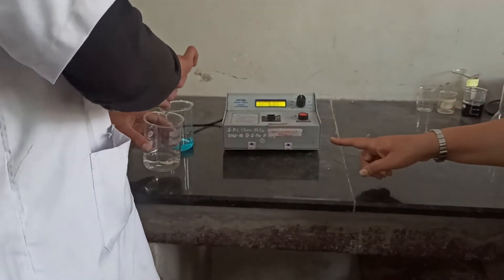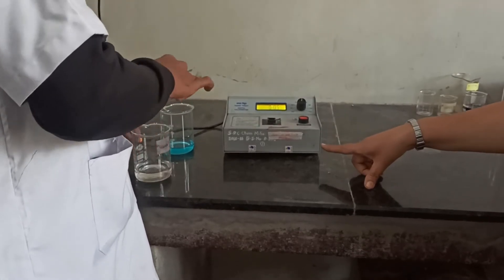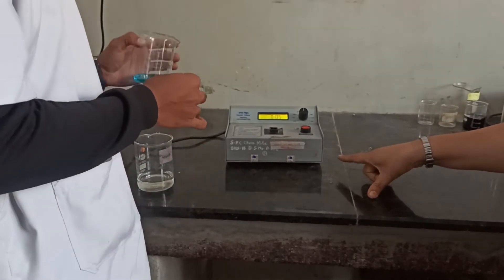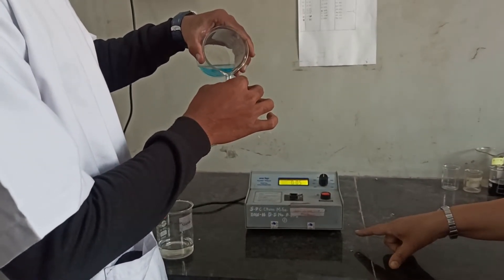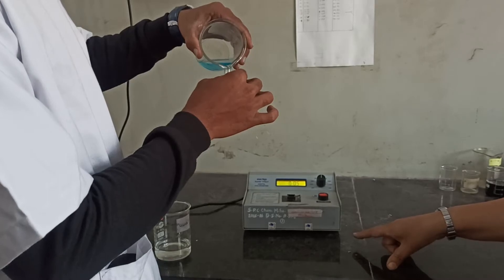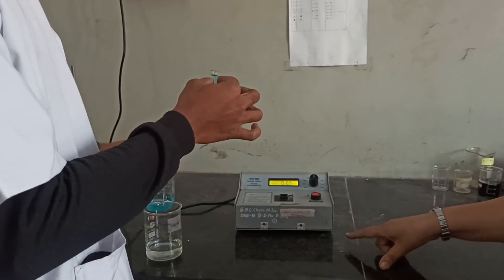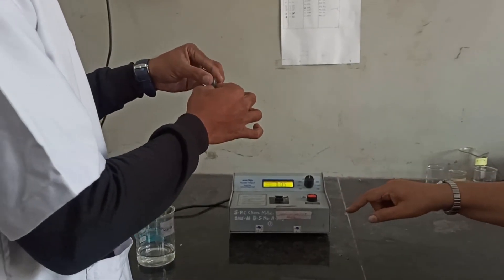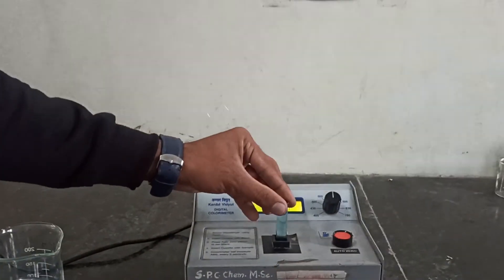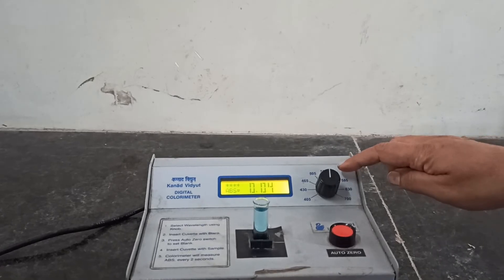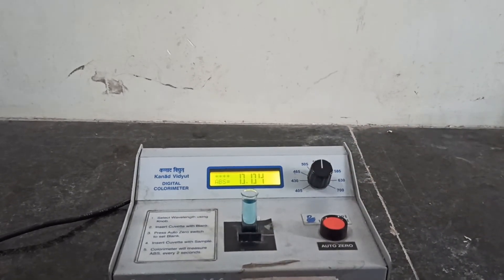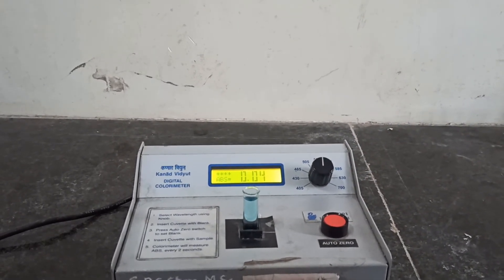This process, whatever we have done just now, it is standardization of the colorimeter. Now we will check out for this colored solution how we can measure the absorbance. Put your colored solution of a defined concentration, press at that particular cuvette position and measure the absorbance. So at 530 nanometers, it is giving me absorbance 0.04.